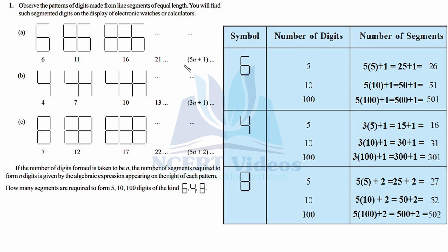For digit 6 we will use the expression 5n + 1, which helps us find the number of segments for any number of digits. For instance, for one digit: put n = 1, giving 5×1 + 1 = 6. For two digits: put n = 2, giving 5×2 + 1 = 11. If you count, it is indeed 11. Likewise for three digits: 5×3 + 1 = 16. Now we have the idea — let's find the answers.